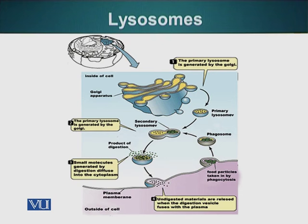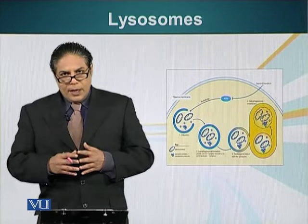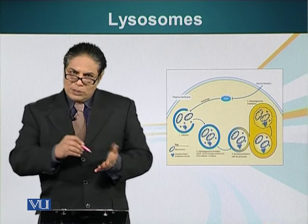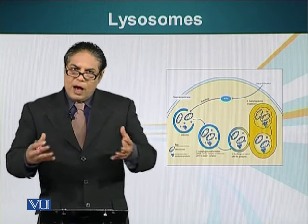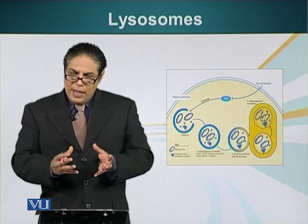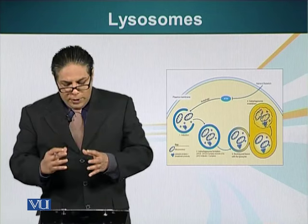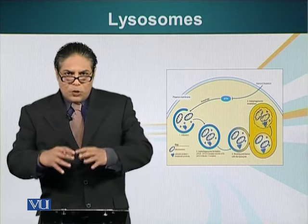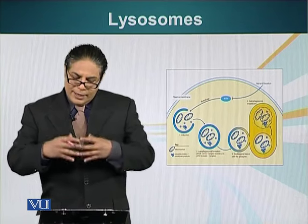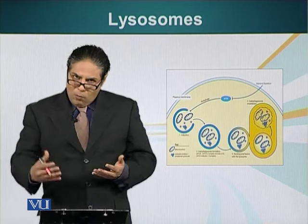Any undigested material is expelled out of the cell. Also, not only phagosomes fuse with lysosomal vesicles — organelles that have become non-functional in the cell, such as mitochondria, are also degraded this way. The cell puts a membrane around non-functional mitochondria and these vesicles fuse with the lysosomal compartment. The mitochondria are degraded and their components are released into the cytoplasm for recycling. Lysosomes are therefore very important in degrading material and providing the cell with raw material for recycling.